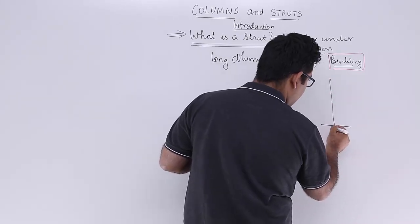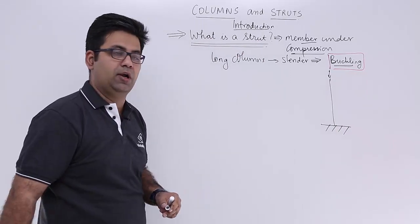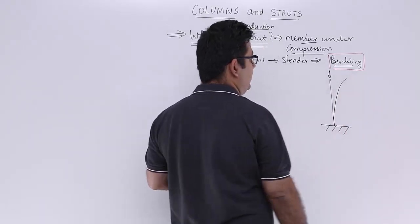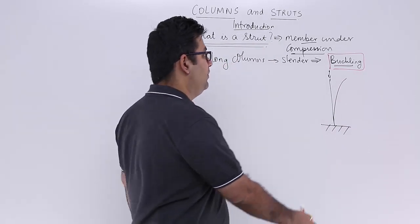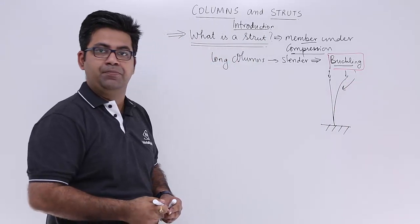If you put load onto this column, it will try to buckle like this—it will bend. This is what we call buckling.